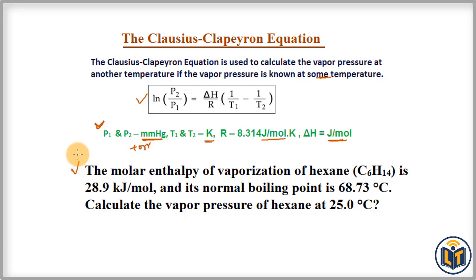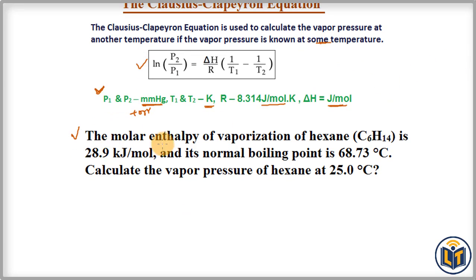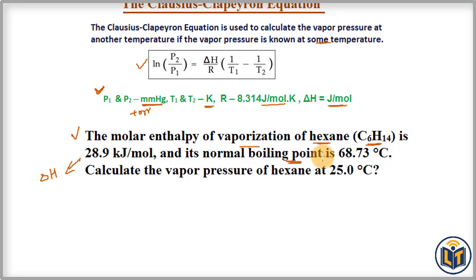Here is the problem: the molar enthalpy of vaporization of hexane is given as 28.9 kJ/mol, and its normal boiling point is 68.73°C. This is an important point where many students get confused — the vapor pressure of a substance at its normal boiling point is not stated in the problem, because it is always taken as 760 mmHg.